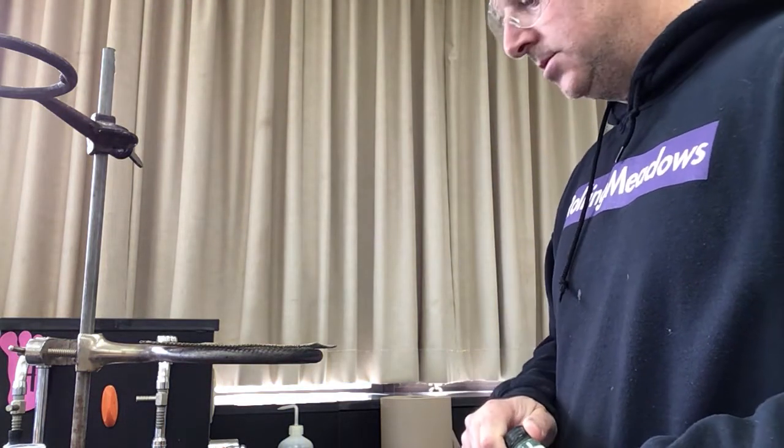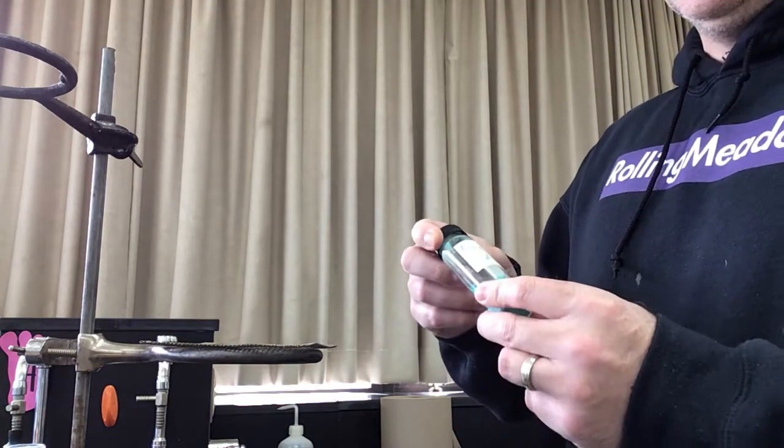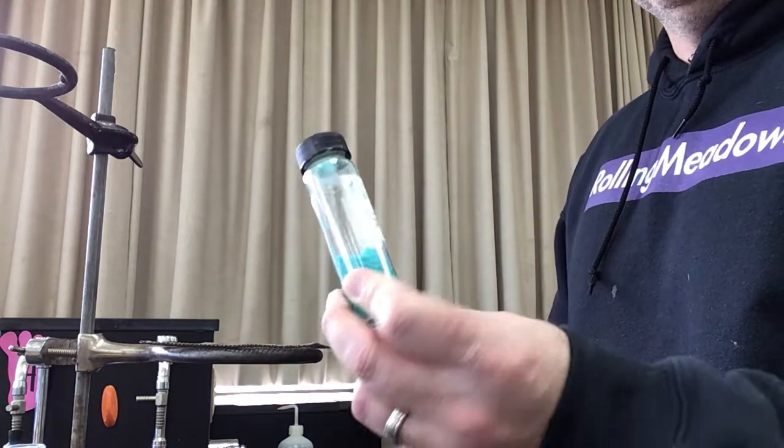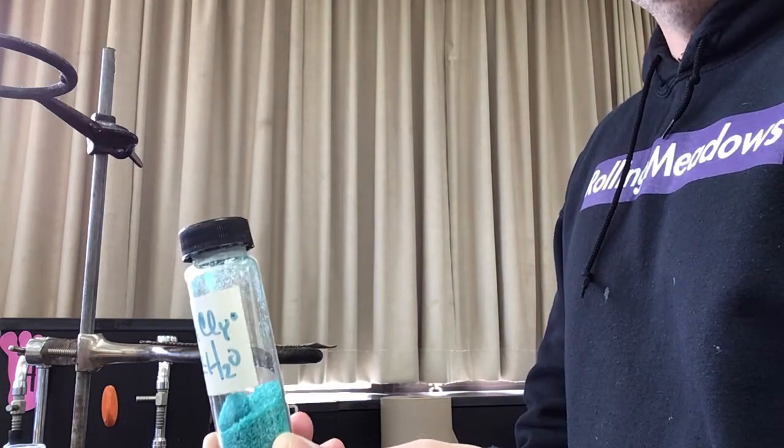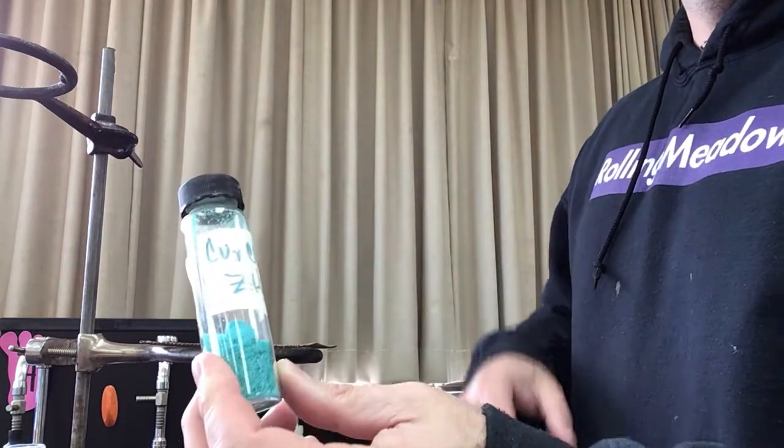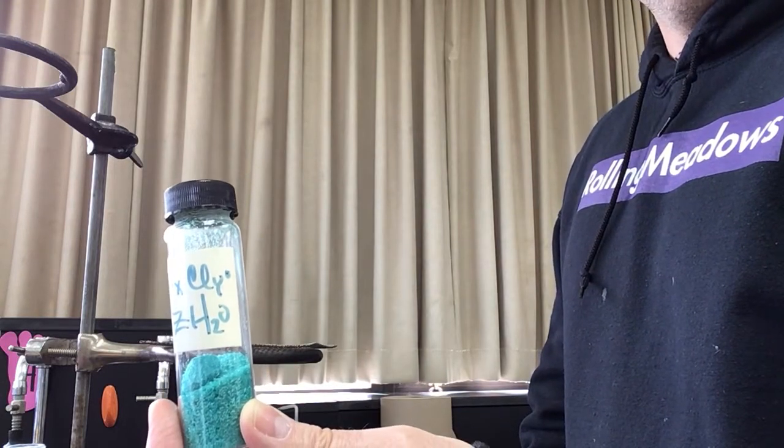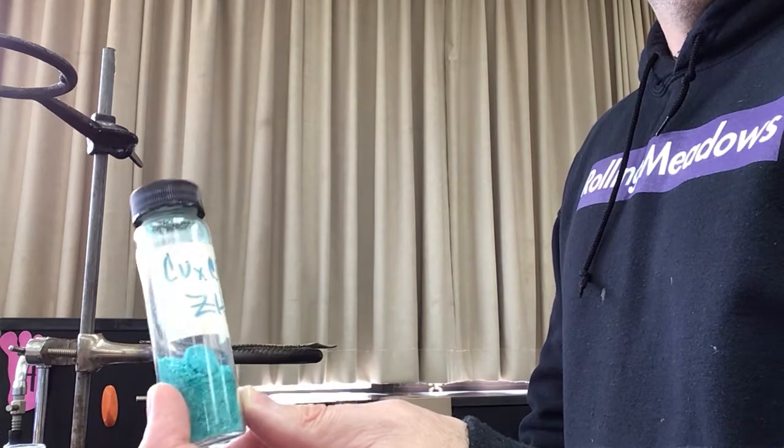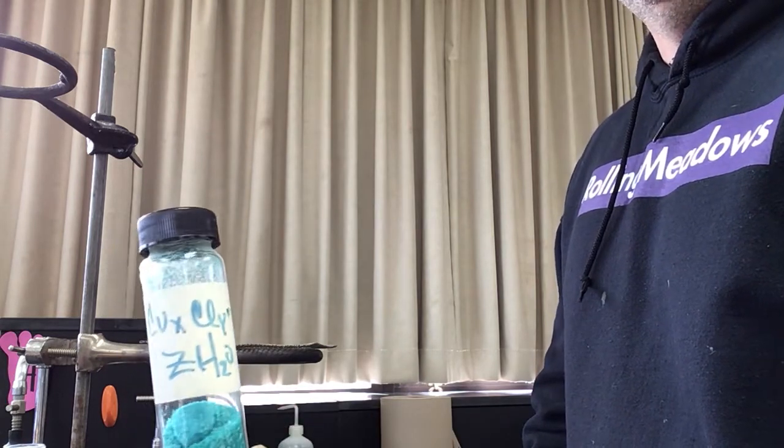Hey everybody, what we're going to do today is go over experiment four where we determine the empirical formula of a hydrate. We've got a copper chloride hydrate, and you can see on the bottle it says CuX, CLY, and then H2O with Z in front. Those X, Y, and Z are variables that we're going to be able to figure out.